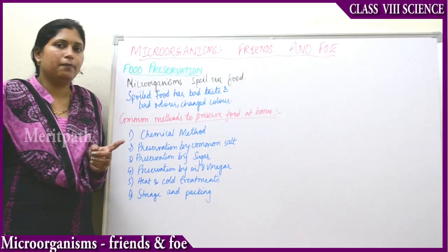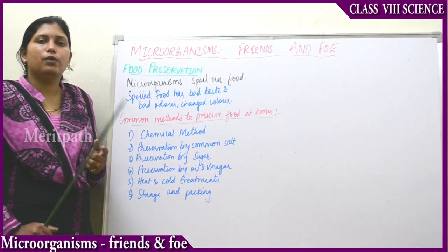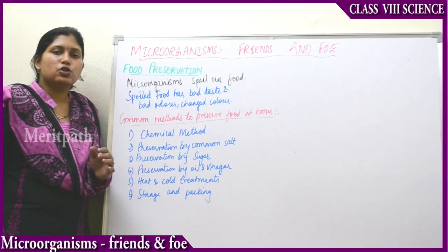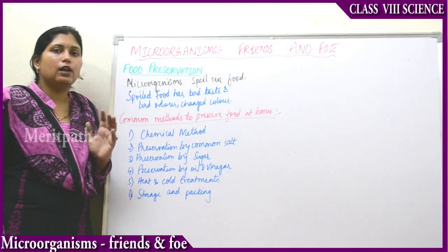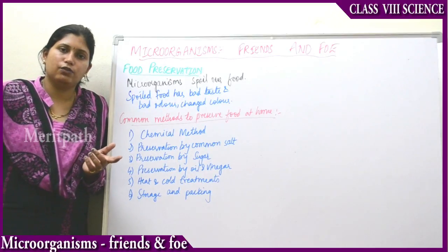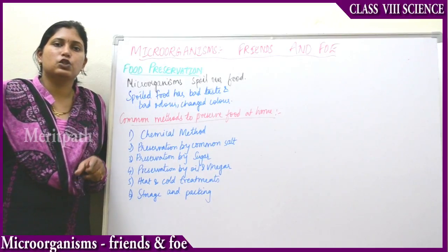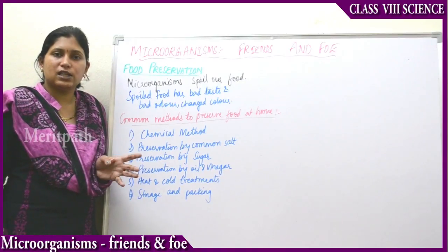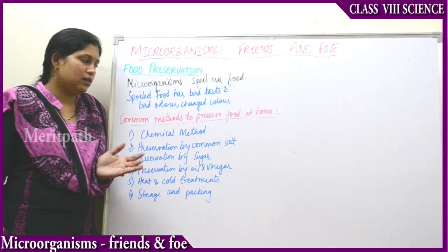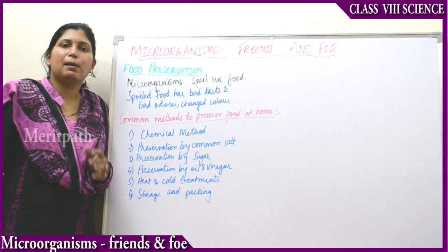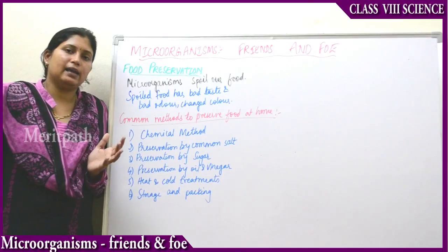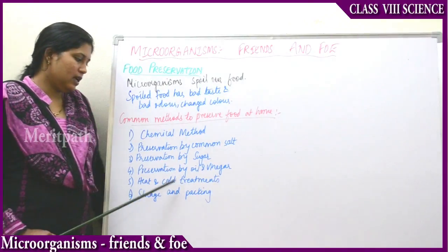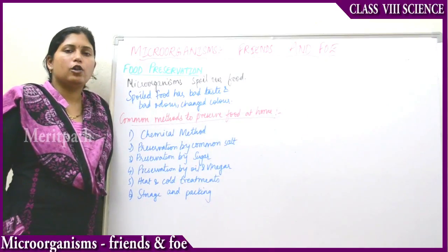For cold treatment, we preserve leftover food in the fridge, which has low temperatures. Extreme heat as well as extreme cold temperatures both preserve food. We store non-vegetarian meat sometimes in freezers for a long time because in cold temperatures the microorganisms cannot grow, and even in extremely high temperatures the microorganisms cannot grow.